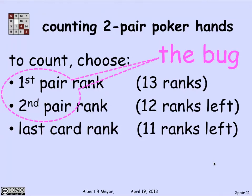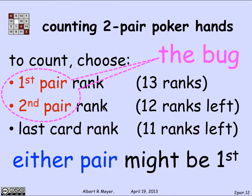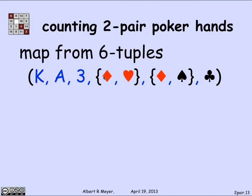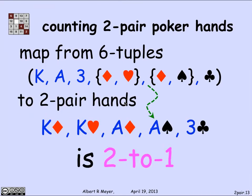The bug in our reasoning was that when we said there are 13 possible ranks for the first pair and 12 for the second pair, we were distinguishing the first pair from the second pair — and that was a mistake. There isn't any first pair and second pair; there are simply two pairs, and there's no way to tell which is first and which is second. That's why we got two different six-tuples mapping to the same two-pair hand. Since either pair might be listed first, this map from six-tuples to two-pair hands is actually a two-to-one mapping — not a bijection.